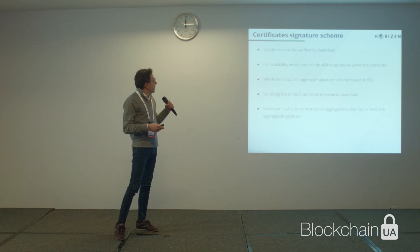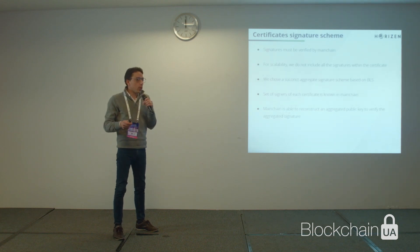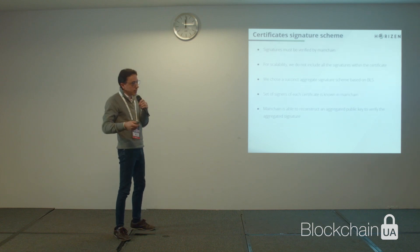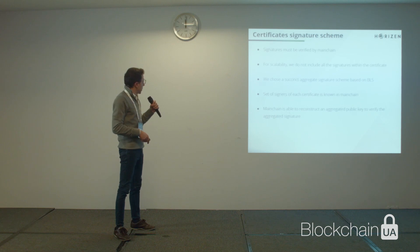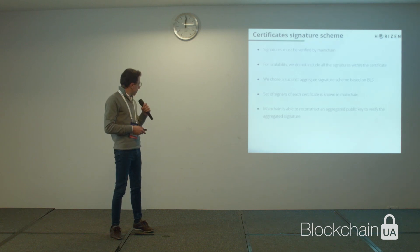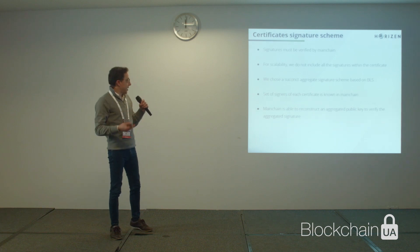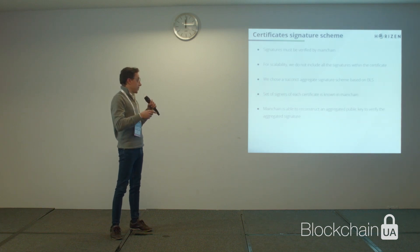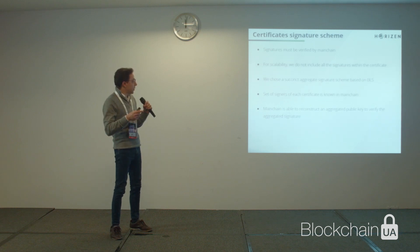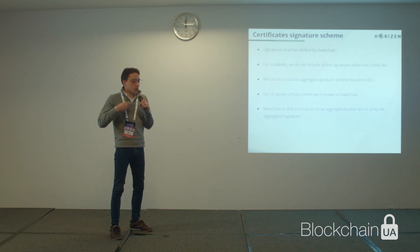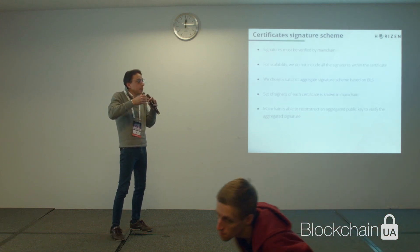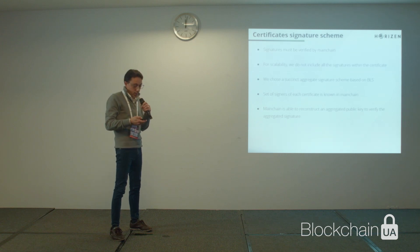Signatures must be verified in the main chain, but for scalability we do not want to include all signatures in a single certificate — it will not scale if we have thousands of certifiers. So we choose a succinct aggregated signature scheme based on BLS. Since the set of signers for a certificate is known in the main chain, we are able to reconstruct the set of public keys associated with each certifier, reconstruct the aggregated public key, and validate the aggregated signature sent with the certificate.